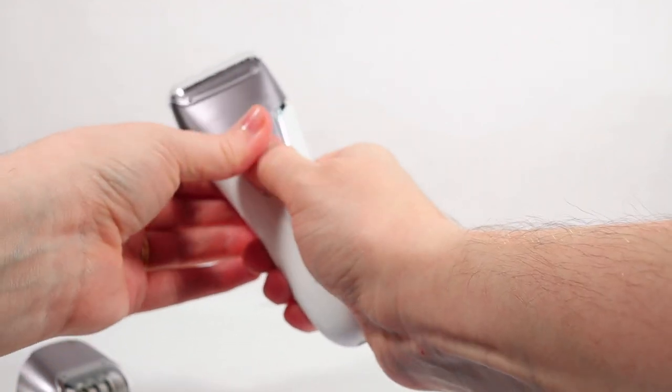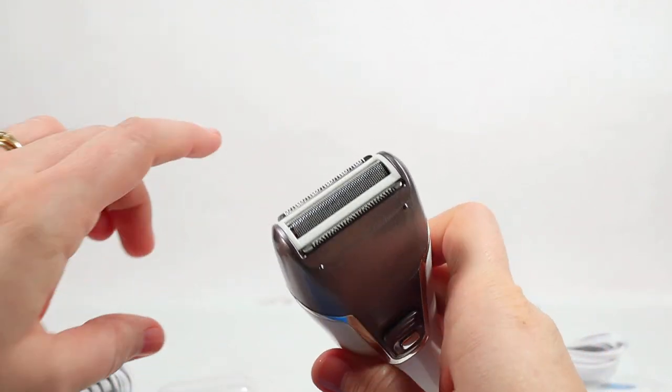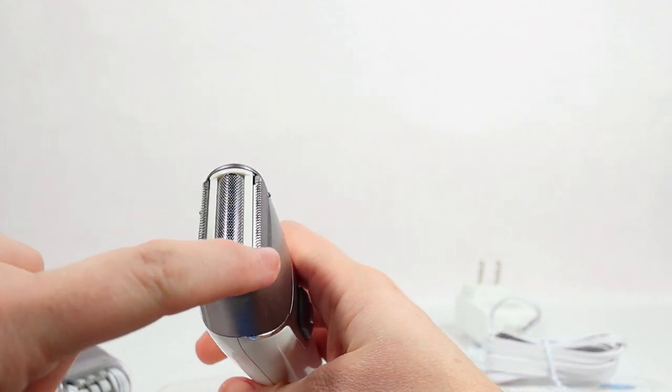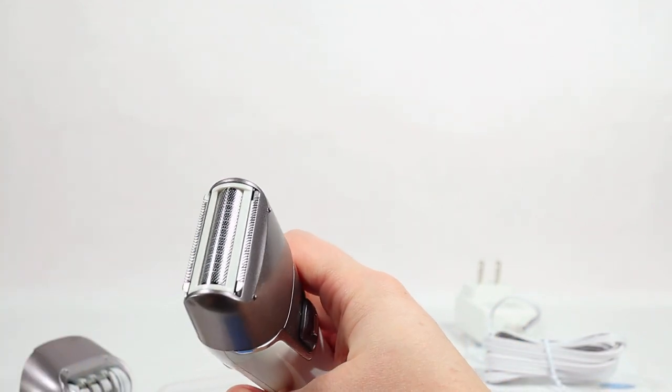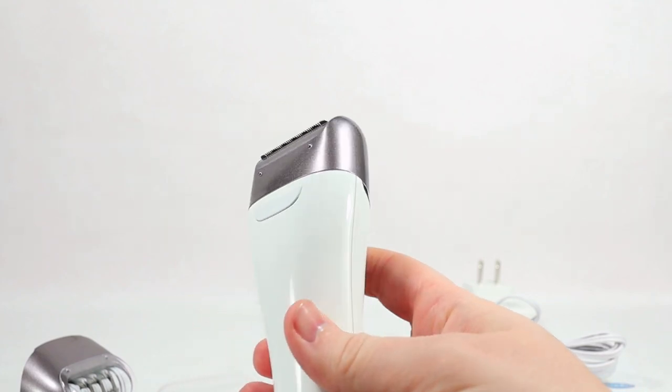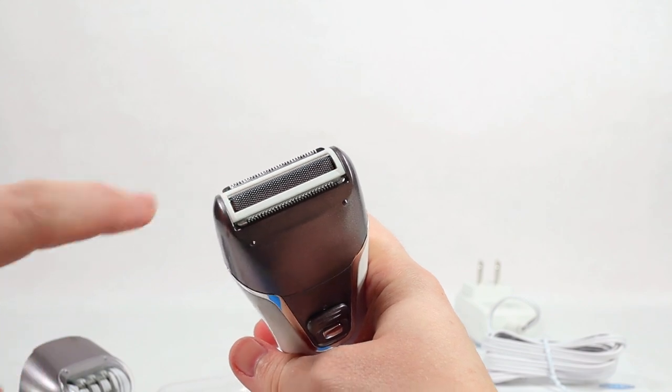One really nice thing is not only does this have the razor head, but it also has a double-sided trimmer blade, so you can trim any extra long hairs so that they can actually get caught with the actual razor.